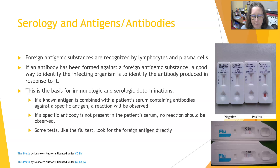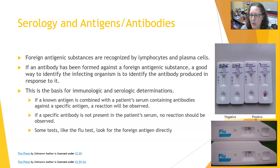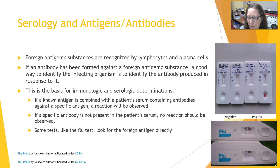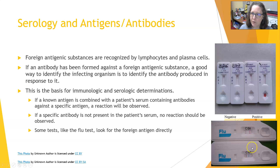Some tests, like the flu test illustrated here, look for the antigen directly. You get a nose swab for the flu, and if the flu virus is present in your nasal secretions, it will be detected in this test using anti-flu antibodies as part of the reagents. In this illustration, this one is positive for flu A and that one is positive for flu B. This is a direct determination from a sample.